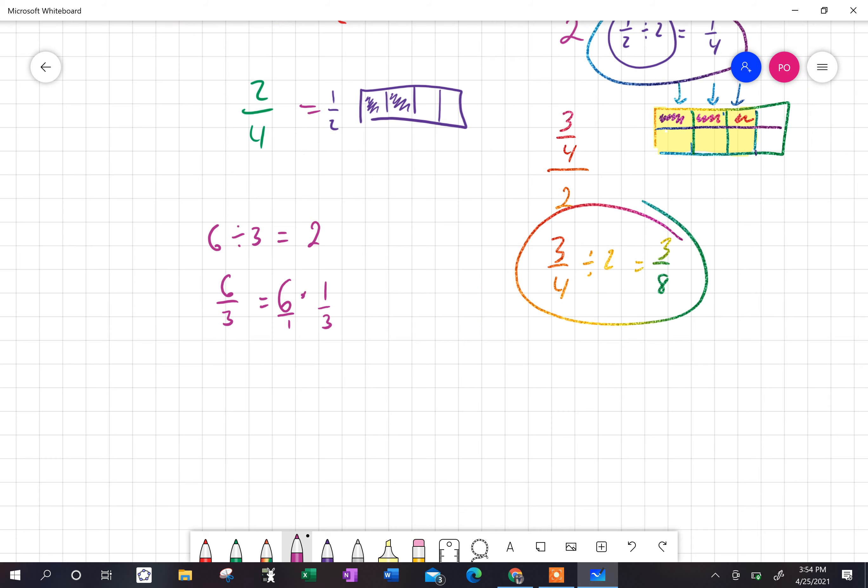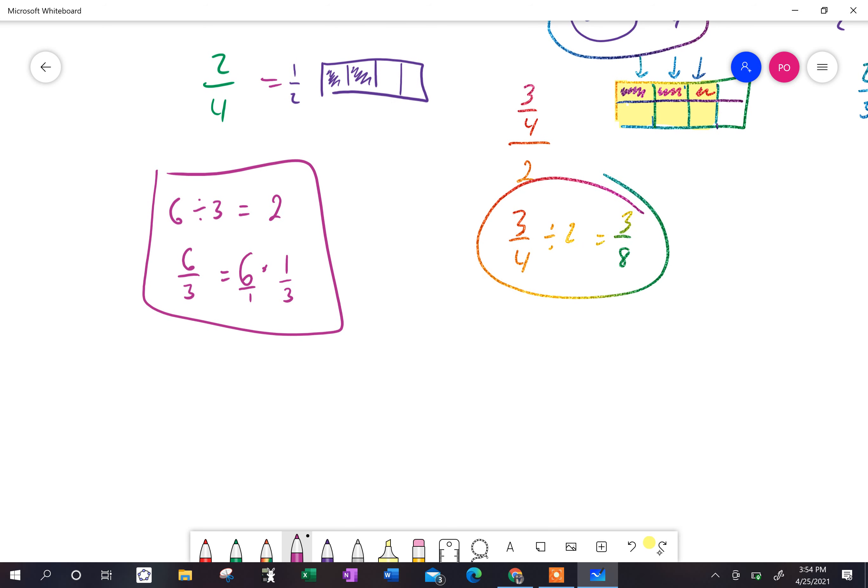Now, let's get into the nitty gritty here. I have six divided by three, which is two. And the way you can think about this is six divided by three can really be written as a fraction, six over three.